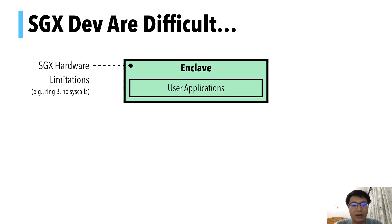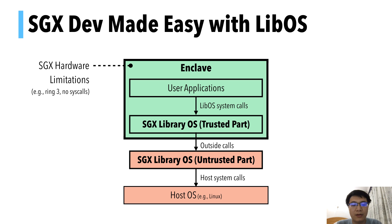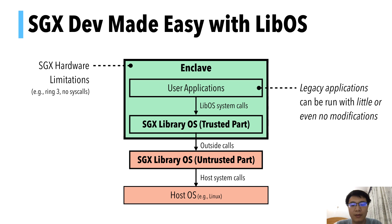However, SGX is known to be hard to program due to SGX's hardware limitations. So, to ease SGX development, library operating systems are introduced by prior work. With LibOS providing system calls to user applications inside enclaves, it is now possible to run legacy applications with few or even no modifications.